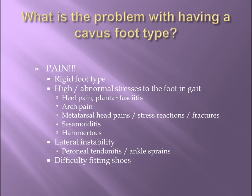The rigid cavus foot type is a poor shock absorber, which results in a painful gait. The high stress due to these rigid feet creates heel and metatarsal head pains and sesamoiditis. Also, arch strain and pain, and muscle imbalances which can result in hammer toes. As the arch rises in a cavus presentation, the heel will invert and create lateral ankle instability and pain associated with inversion ankle sprains or peroneal tendonitis. Finally, these feet are also difficult to fit in shoes due to their prominent dorsal midfoot.